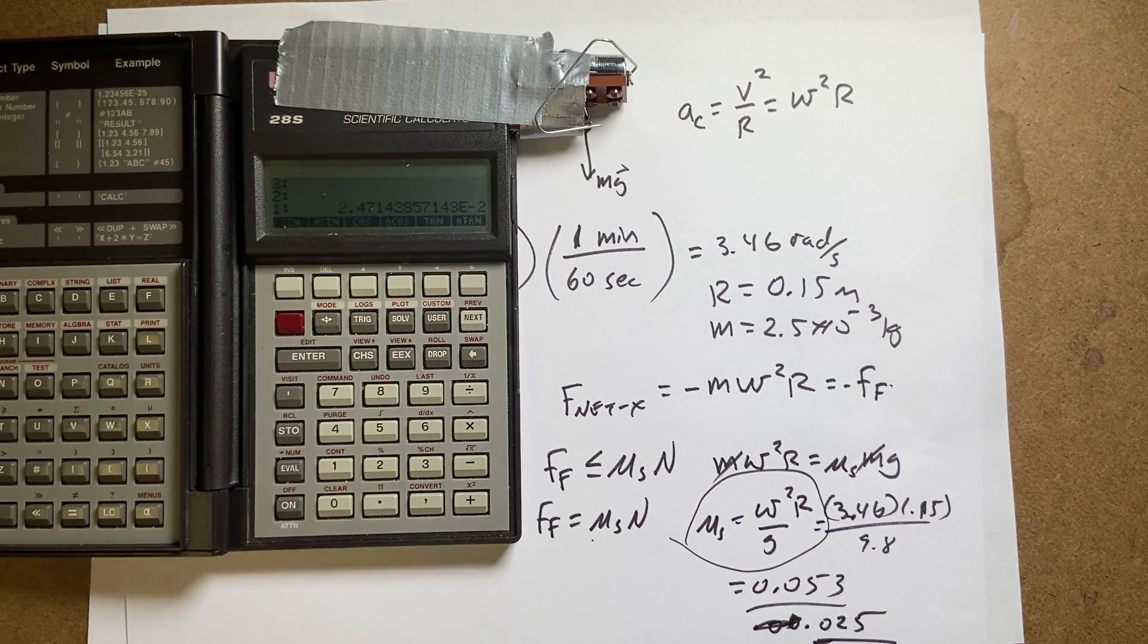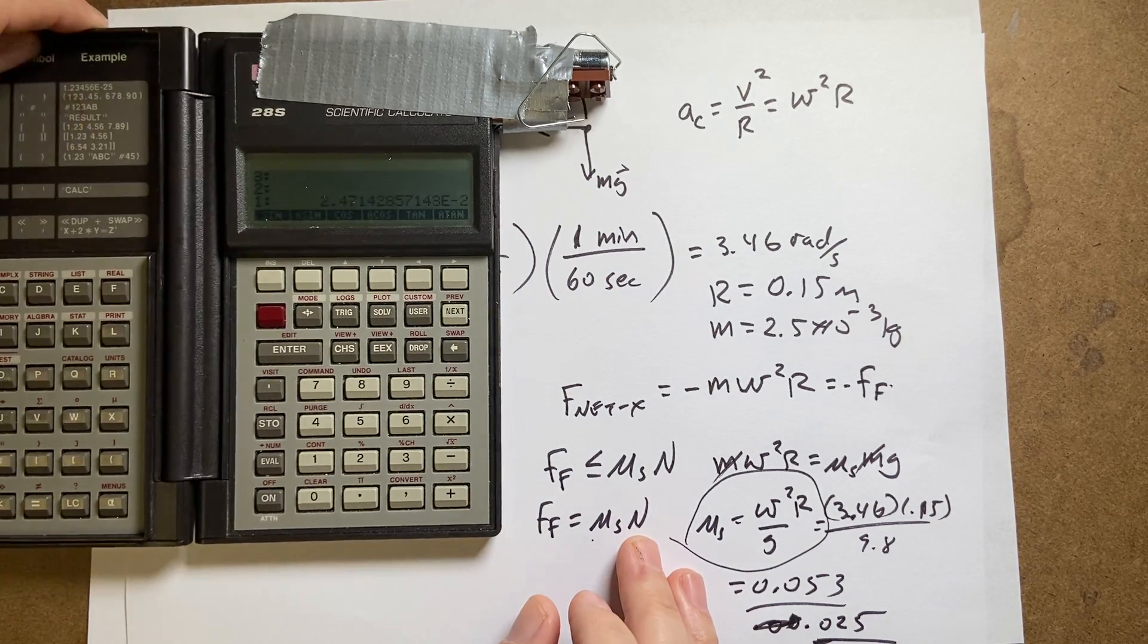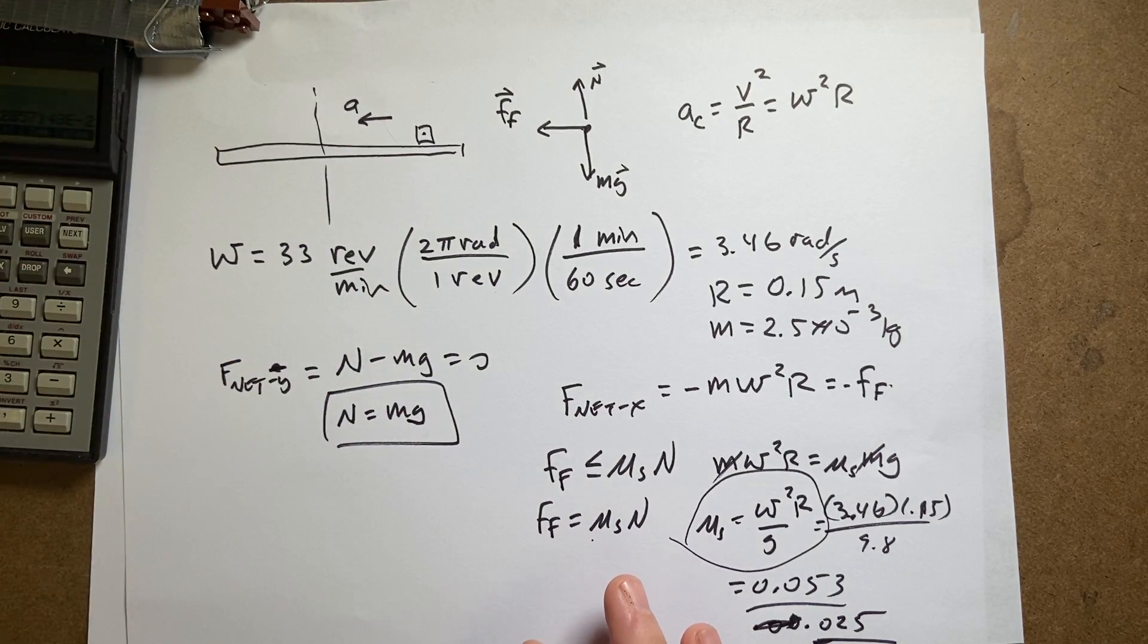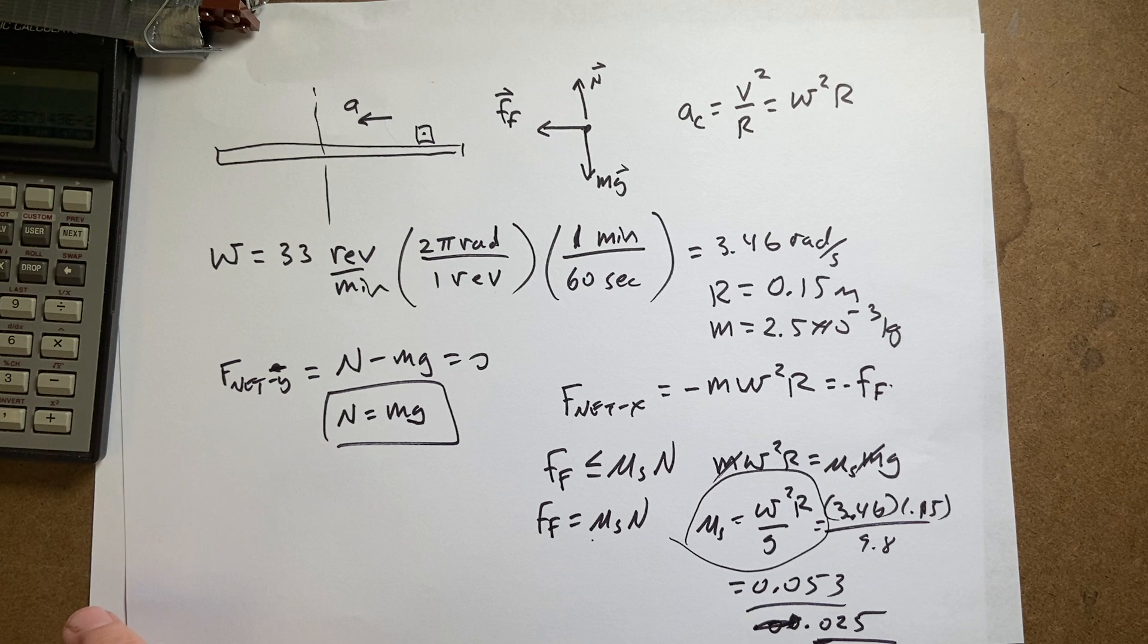So I have even less friction, and that kind of makes sense because imagine if the penny was at the middle, it wouldn't need any friction at all. So the closer you get, the less friction you need to hold it in there. Okay, the end.